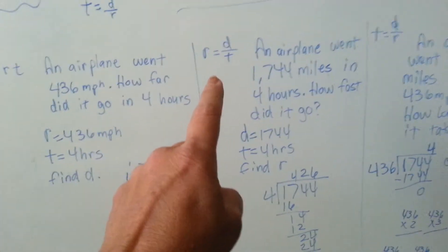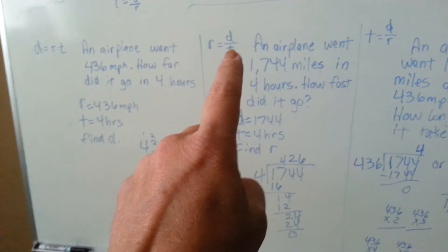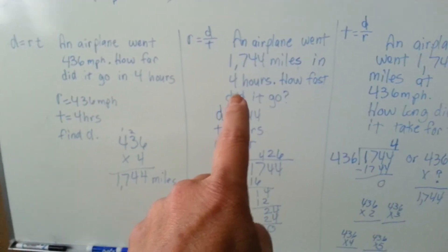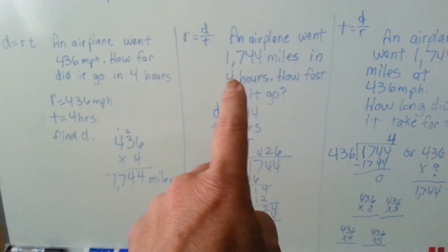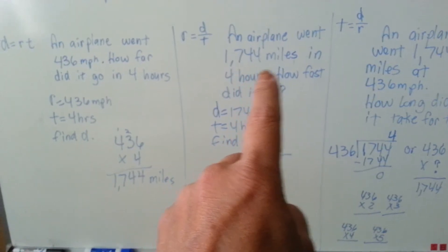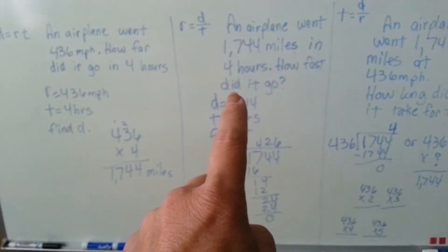Now, if you're looking for the rate and you need to divide the distance by the time, the problem would say an airplane went 1744 miles in four hours. How fast did it go?